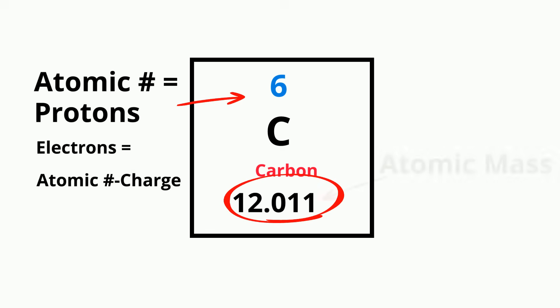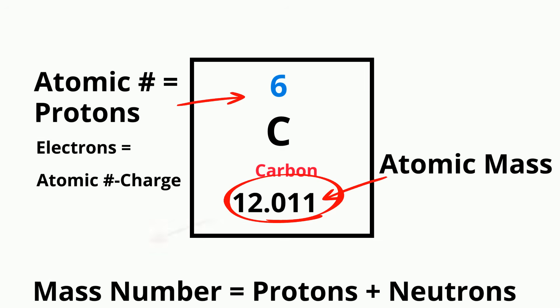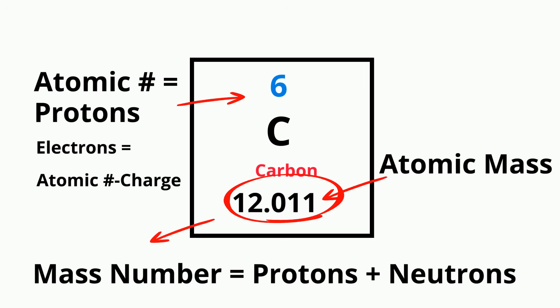Below that is the atomic mass. This is the weighted average of the masses of all the element's isotopes. If you round the atomic mass to the nearest whole number, it gives you the mass number. And that's the sum of the number of protons and neutrons in a specific isotope.